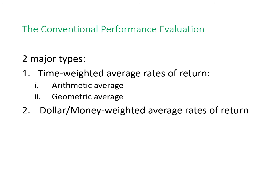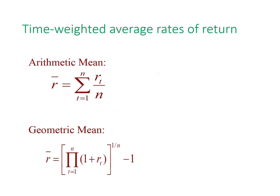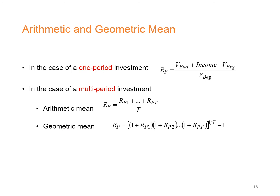Next, we are going to learn two conventional performance evaluation tools: the time-weighted average rate of return and the dollar- or money-weighted average rate of return. The time-weighted average rate of return can be divided into two types: the arithmetic average and the geometric average. In the case of a one-period investment, the return is the ending value plus income minus beginning value, divided by beginning value.